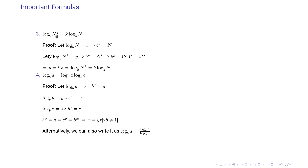The third important formula: log of n to the power k with base b equals k times log of n with base b. Let log of n with base b equal x, so b^x equals n. Then log of n^k with base b equals y means b^y equals n^k equals (b^x)^k equals b^(kx), so y equals kx, giving log(n^k) base b equals k·log n base b.